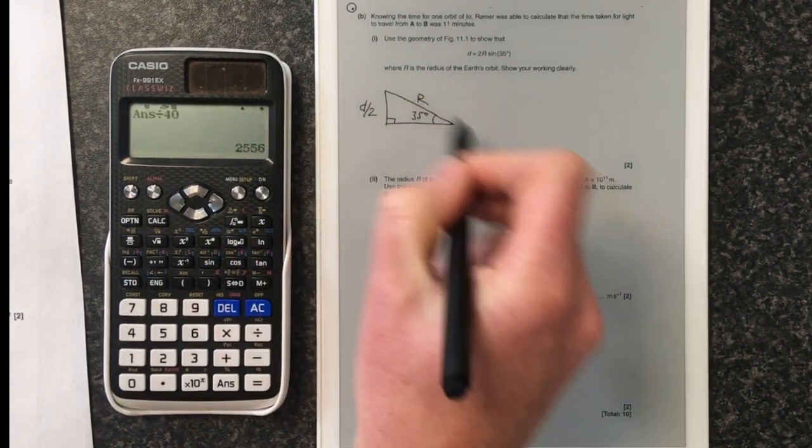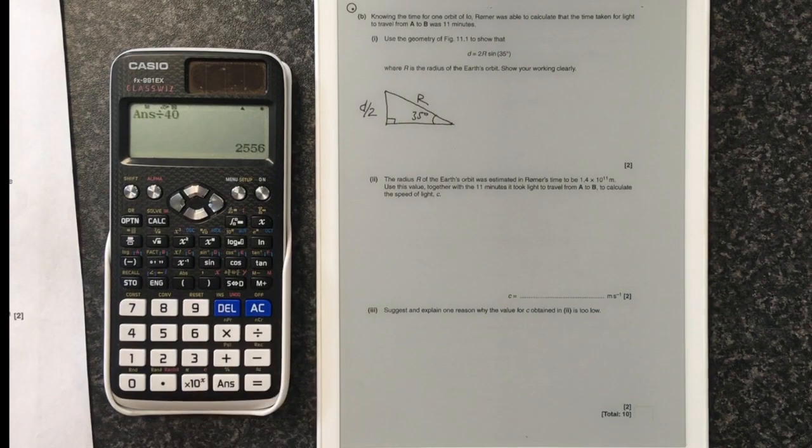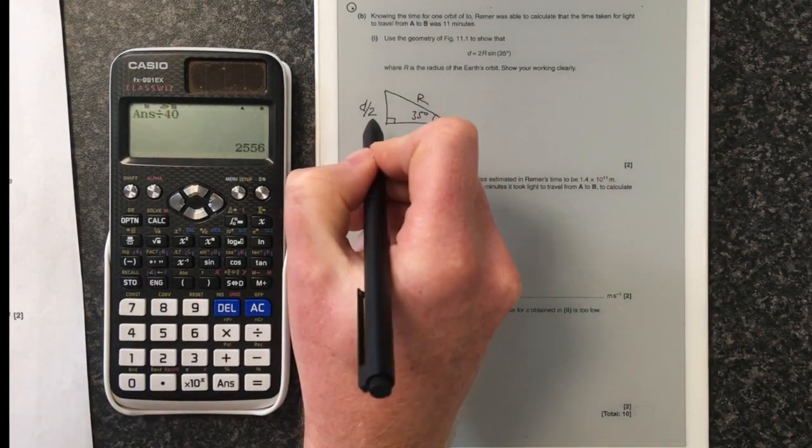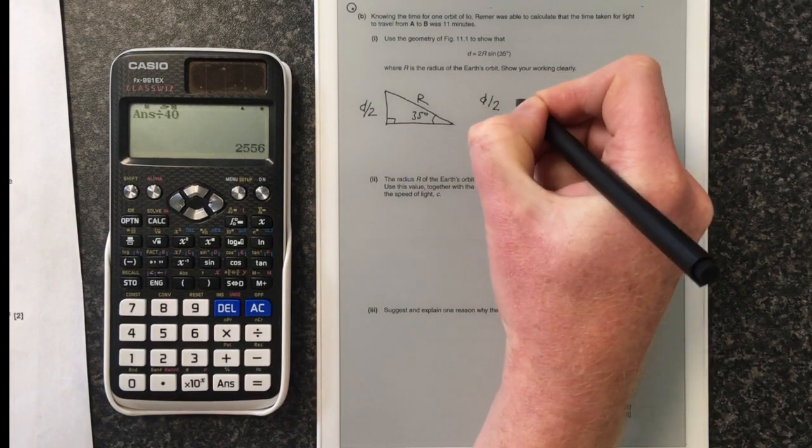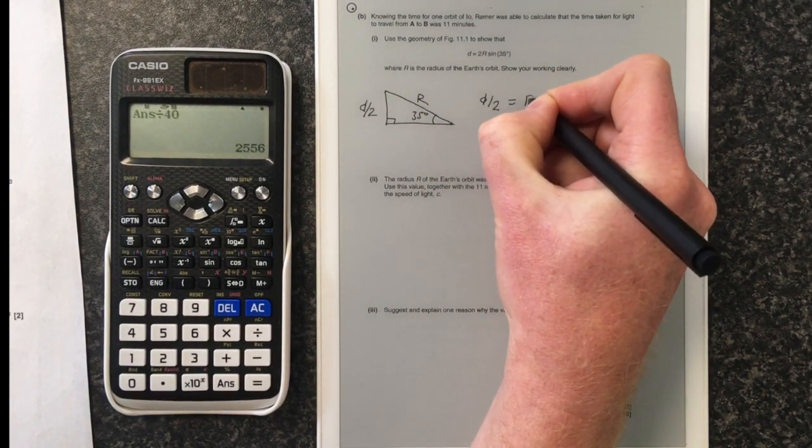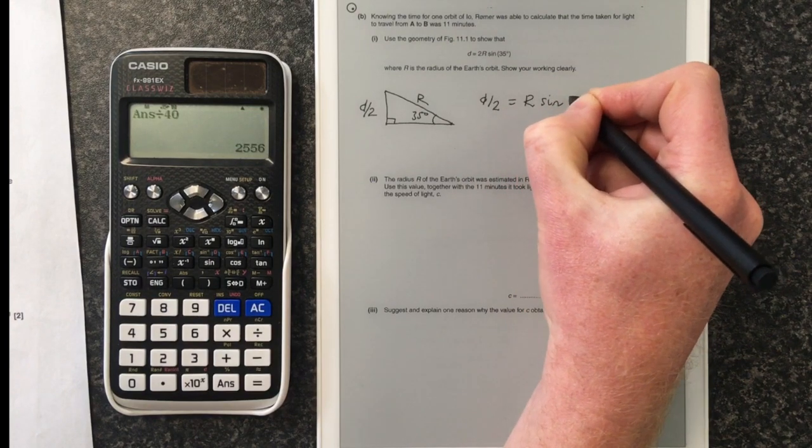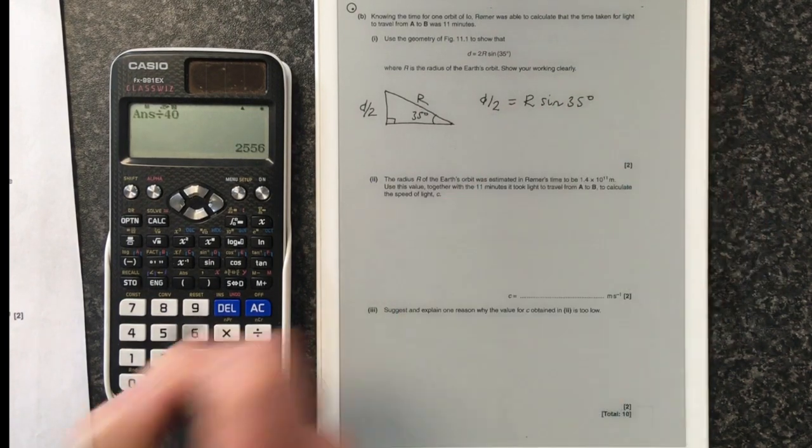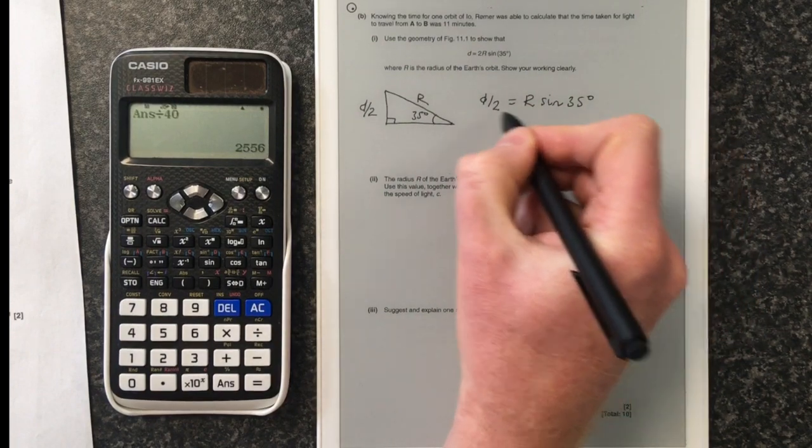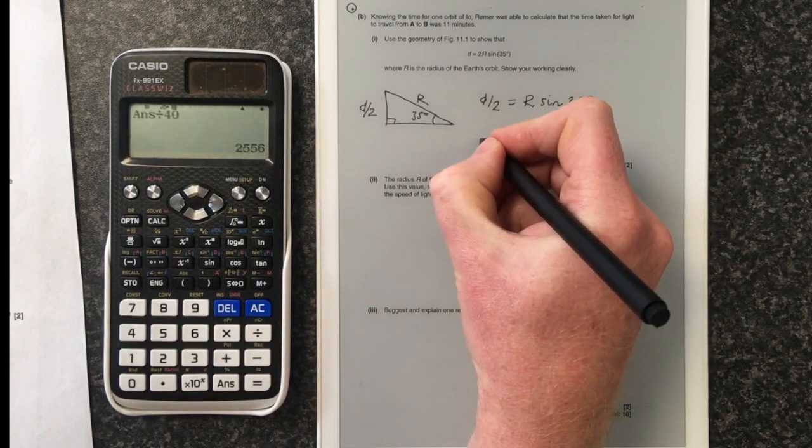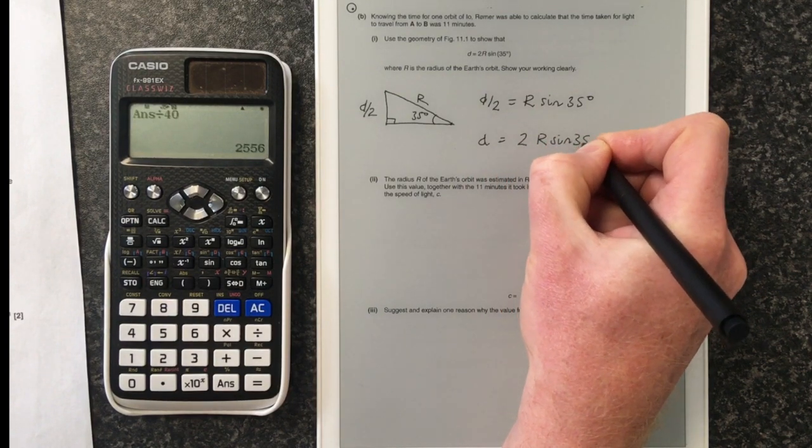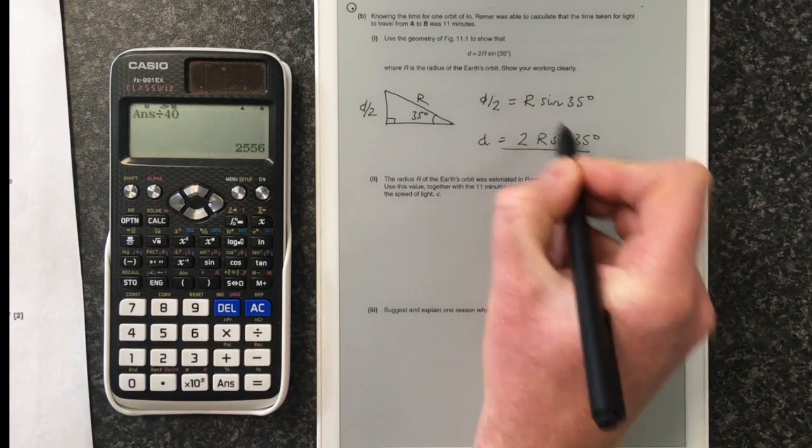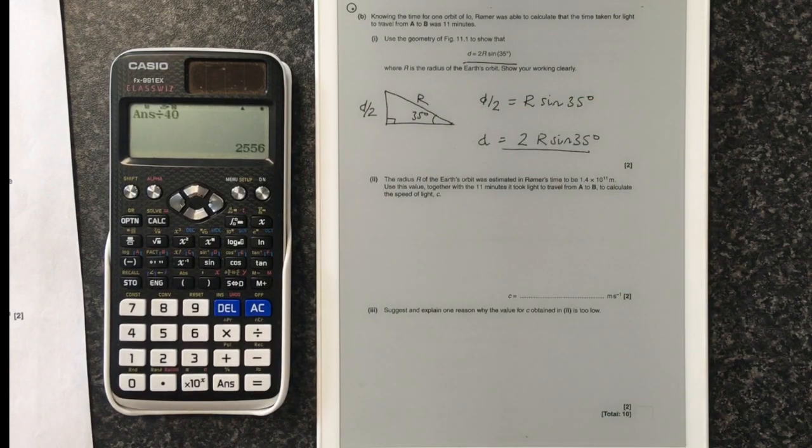So we've got a triangle that looks like this. Now we can use our trigonometry to rearrange that. We know that the opposite of an angle can be worked out. So D over 2 can be worked out as being hypotenuse R times the sine of the angle. But that means that's D over 2. But we don't want D over 2. We want D. So D is going to be 2 times R sine of 35, which is what they asked us to find. So we've proved it there.